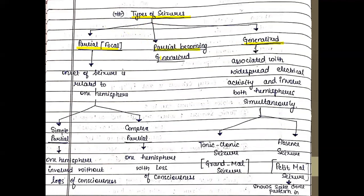And there is an intermediate — partial becoming generalized. How do we define partial? If the onset of seizure — please note the word onset — if the onset is related to only one hemisphere, then we say it is partial or focal. And if it is associated with widespread electrical activity and involves both hemispheres simultaneously, then it is a generalized seizure.